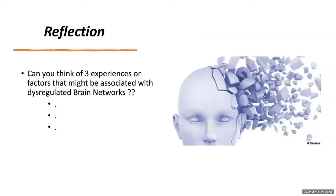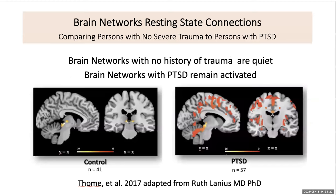Let's look at the other side of things. Can you think of three experiences or factors which might be associated with dysregulated brain networks? Let's look at these two images and compare a person with no history of severe trauma to a person with PTSD. On the left we see the brain during the default mode — the brain on the left is quiet. When we look at the right for the person with PTSD — post-traumatic stress disorder — we can see that many areas of the brain are activated.